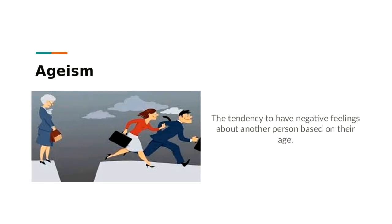Ageism is the tendency to have negative feelings about another person based on their age. Ways to avoid this include having company policies against it or having blind screenings for job applications, removing the ability to see an applicant's age and focusing just on their skills.